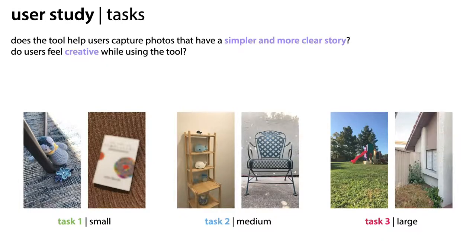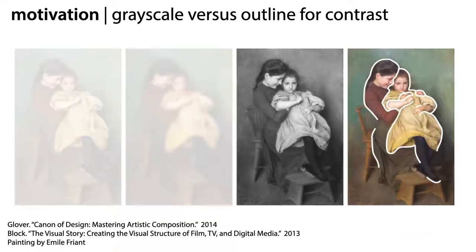Since we needed to run remote studies, we had participants select two different locations with subjects of three different scales: small, medium, and large. Thus, participants completed a total of six photo tasks at each of two locations of their choosing. Here are a few participant photos for each task to give you a sense of the differences in scale.